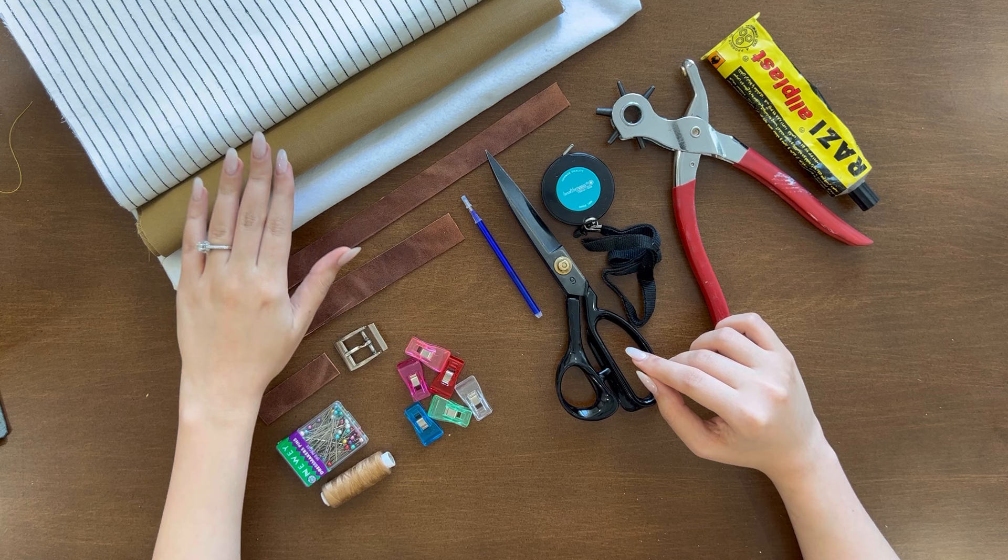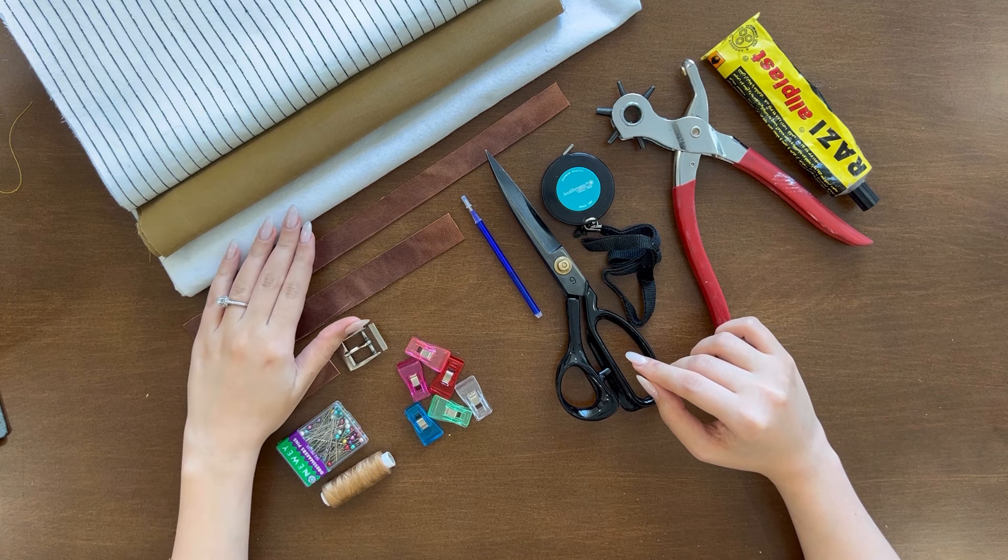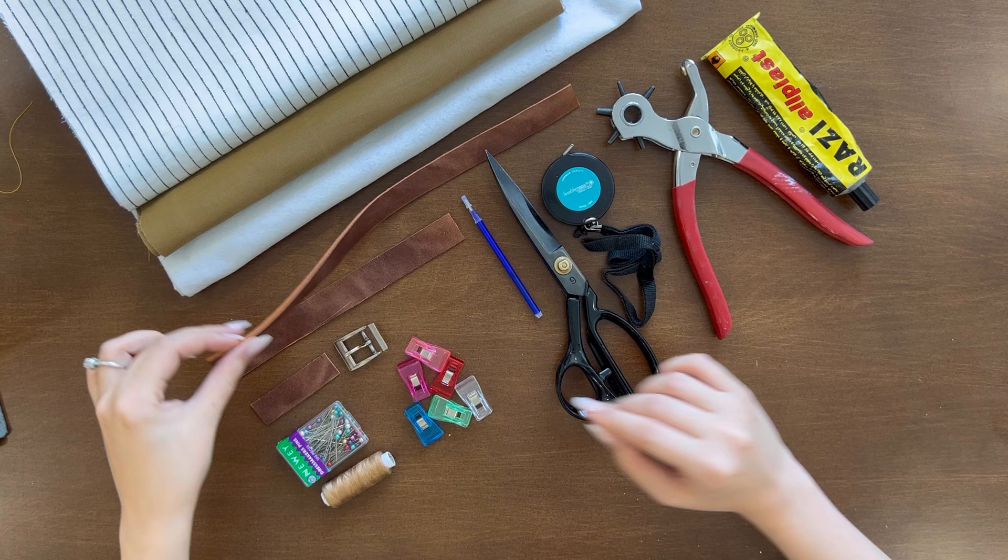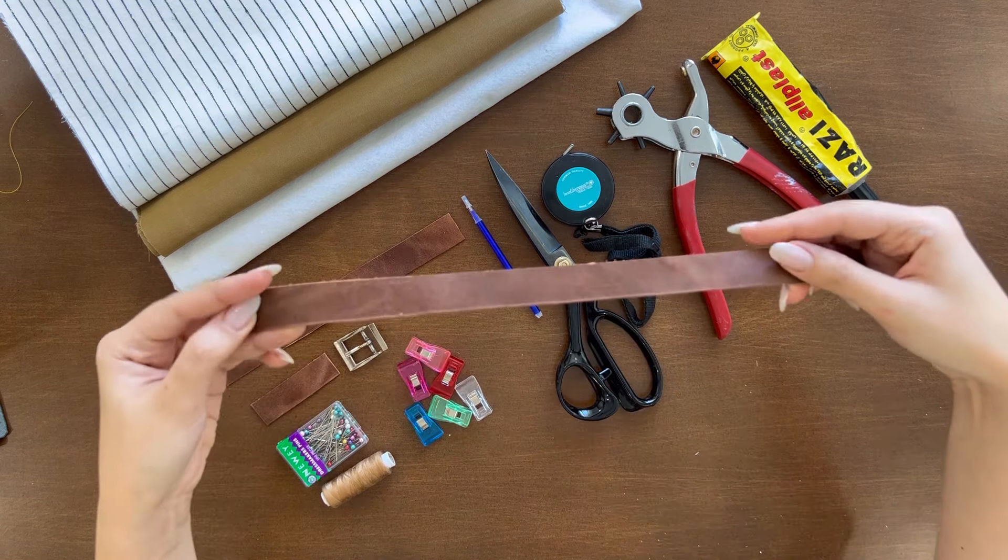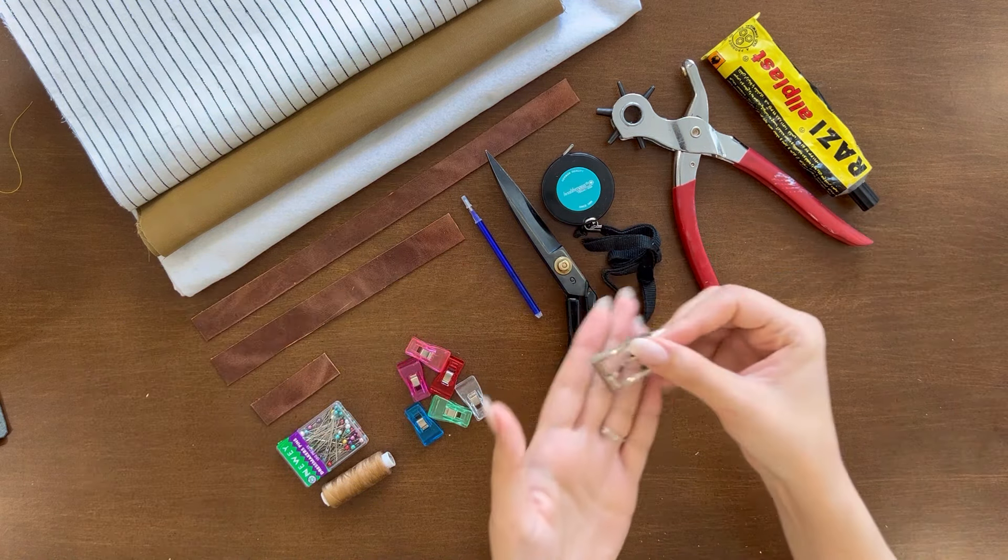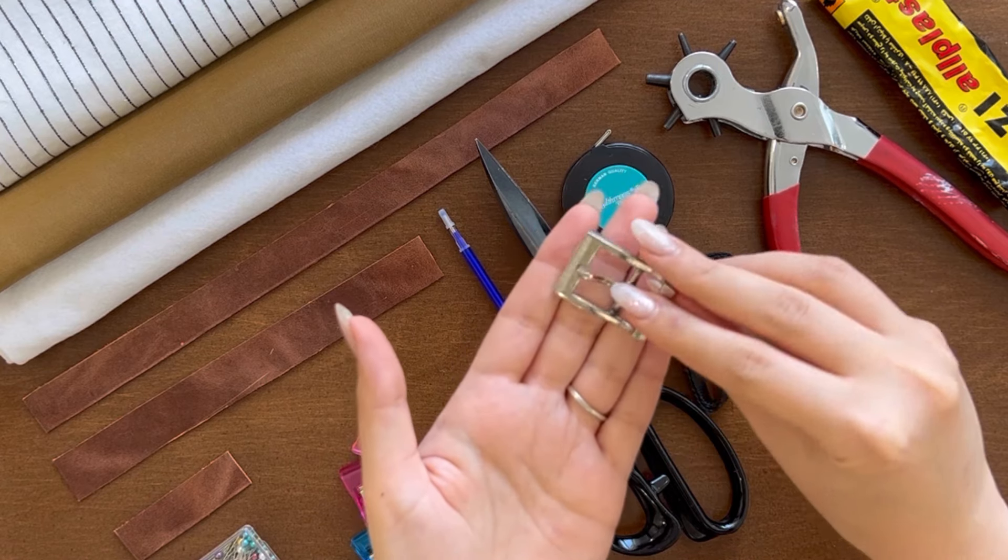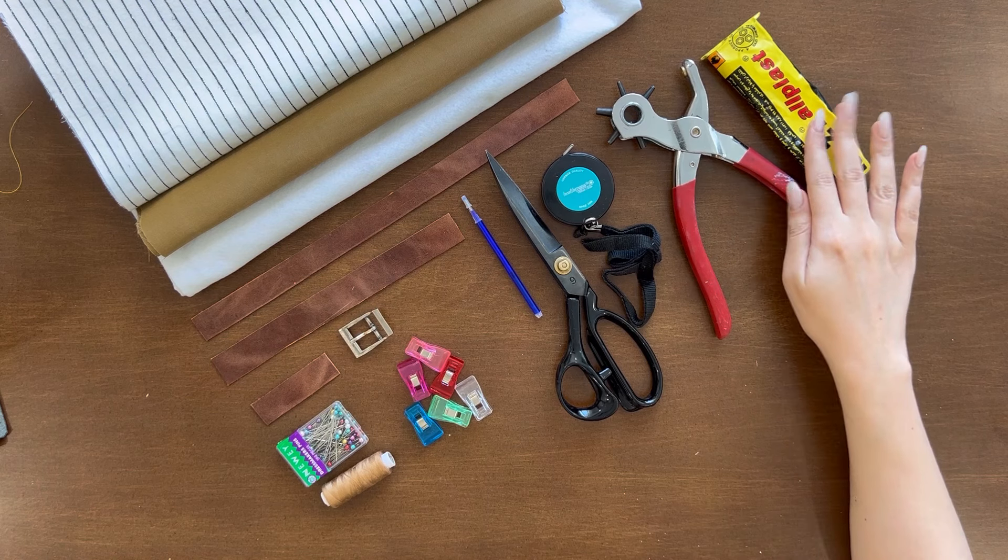For the material we need main fabric, lining and interfacing. We also need three leather straps, which I pre-cut out of leather, but you also can use 2 cm width leather straps. I also need one 2 cm width metal belt buckle.